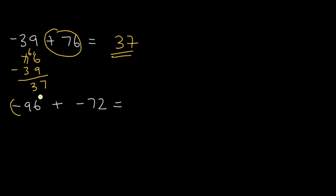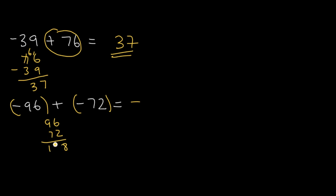Now work on this other problem. Let's group the negative numbers and add. 96 and 72 will give us 168, but our final answer is negative 168, because we were adding two negatives.